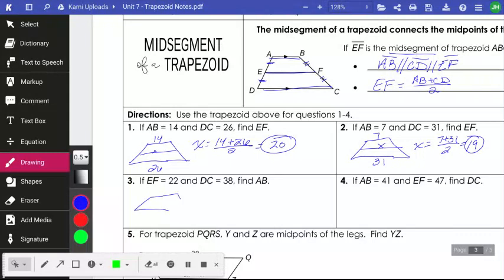All right, I now have EF, which is this, is 22, and DC, which is the bottom, is 38. And I am missing this measurement here. Okay, so I know that the midsegment, which in this case is 22, is the average of my bases. So you're doing exactly the same thing, but your X is in a different spot now. Because I actually know the midsegment, where I was finding it before.